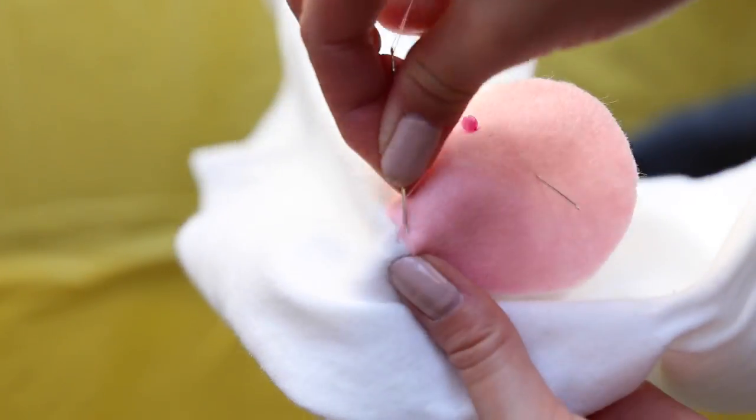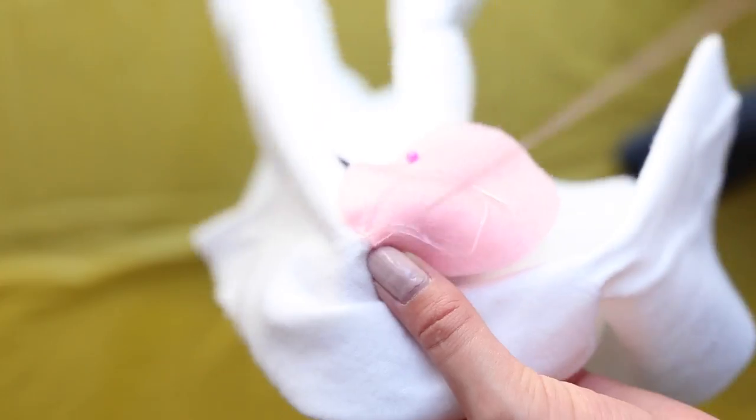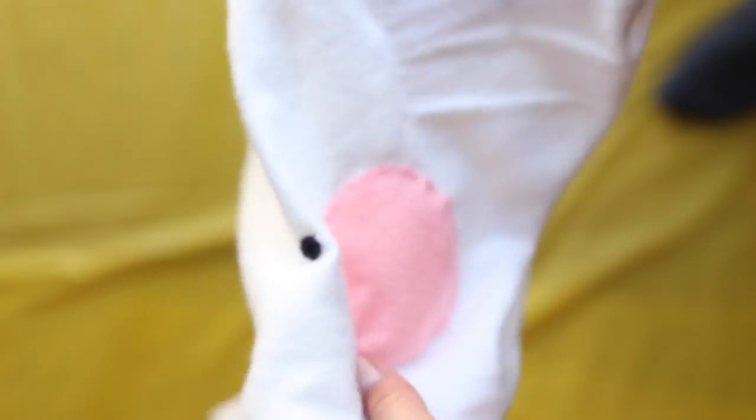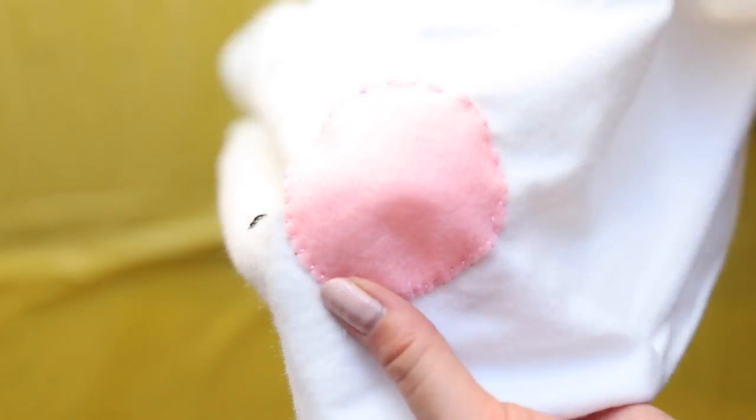Then, sew that on. You can use a pin to keep it in place while you sew. If you want an easier way to do this, you can also use fabric glue and simply glue the blush on, but I like the look of the pink thread.